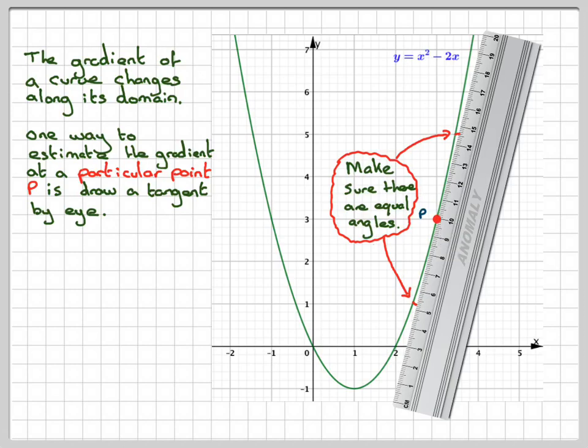And then once you've found the correct position, you draw in a line like I've just done here. And that's called the tangent. And what you do is you calculate the gradient of that tangent.